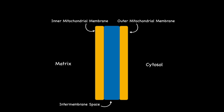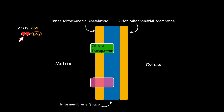The story begins on the matrix side and more specifically with Acetyl CoA. Since Acetyl CoA cannot be transported directly across the inner mitochondrial membrane to the cytosol, its two carbons are transferred by two transport mechanisms — namely the citrate and malate transport systems — which make up the citrate malate shuttle.